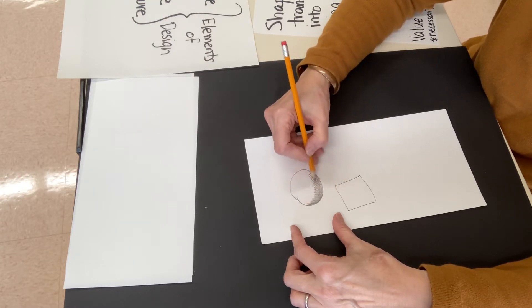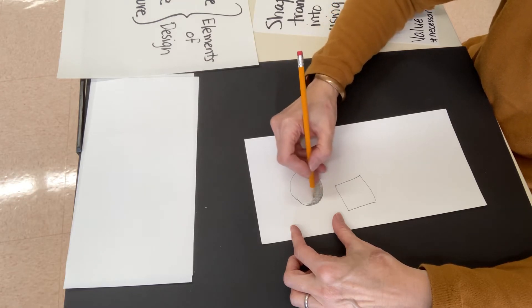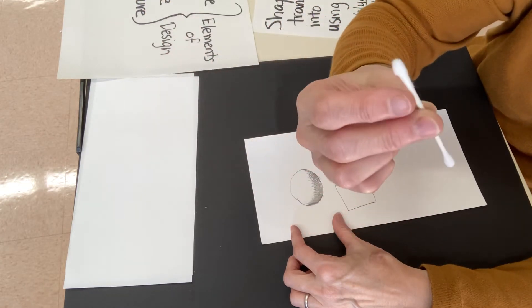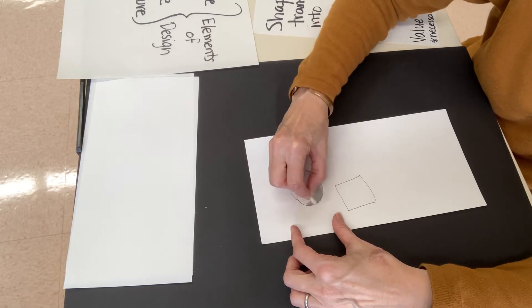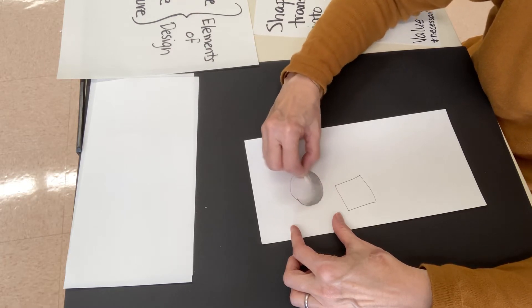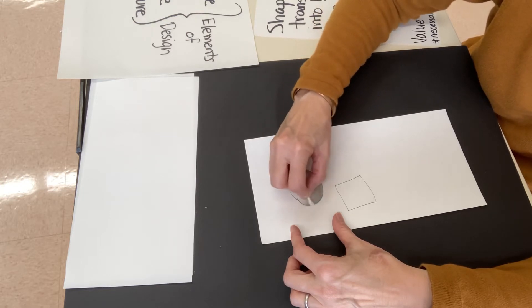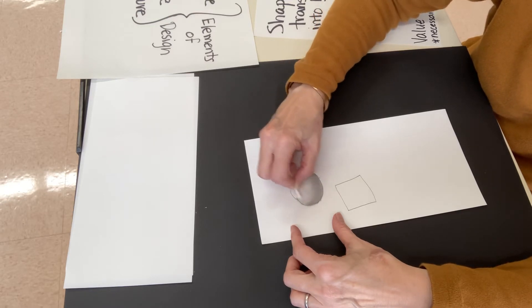And then taking either your finger or a favorite here at Ansonia High School for smudging, in case you don't want to get dirty, use a q-tip. Take the q-tip - oh, that works really good. That's excellent. And you can smudge the pencil to create a light and dark area.